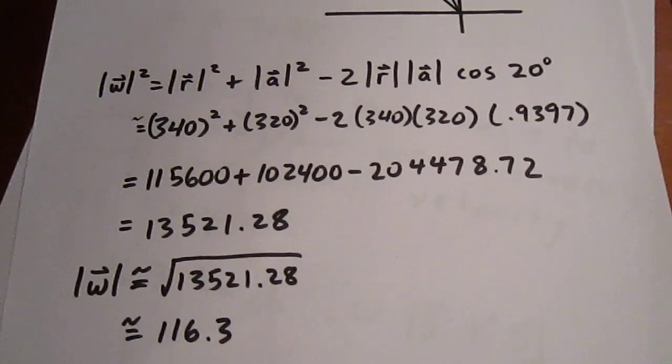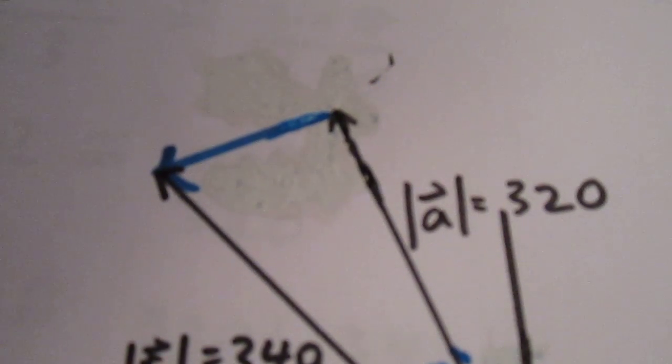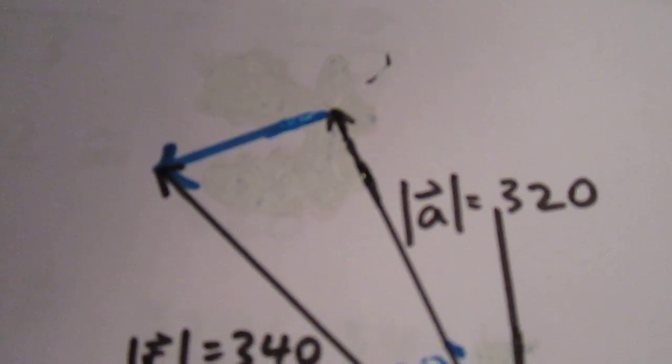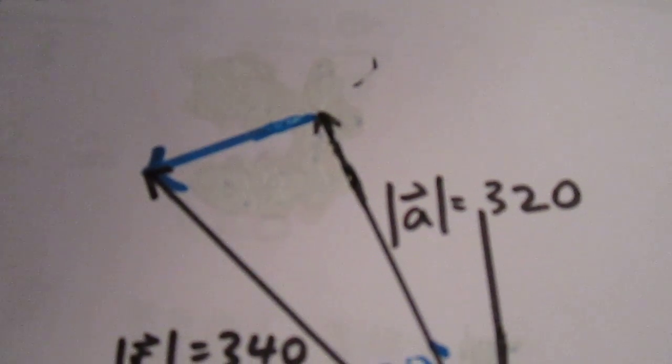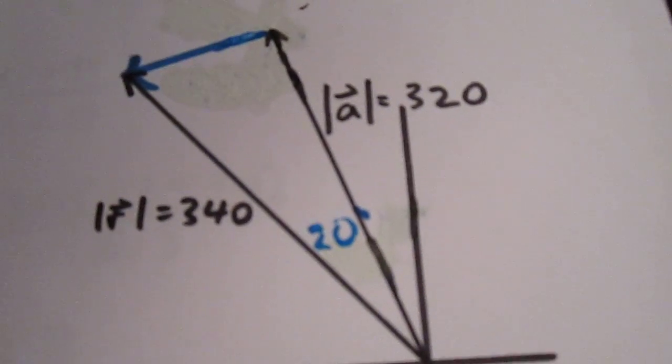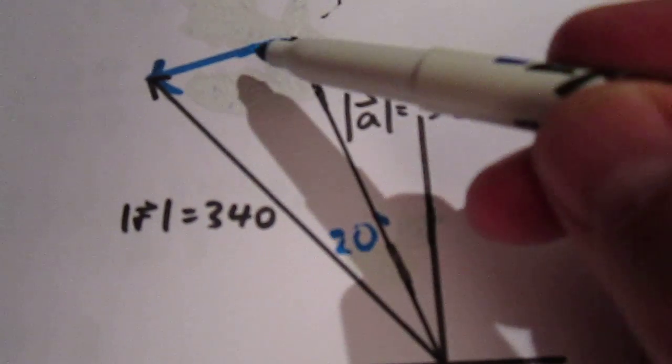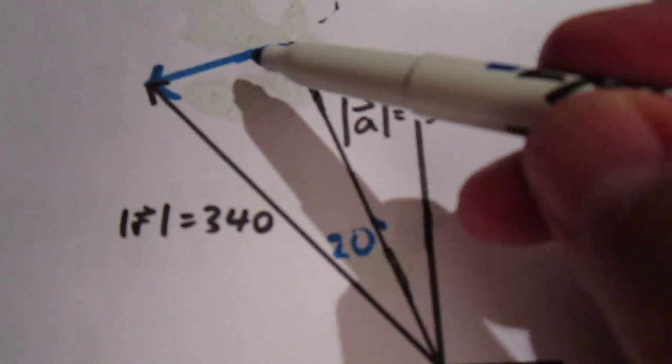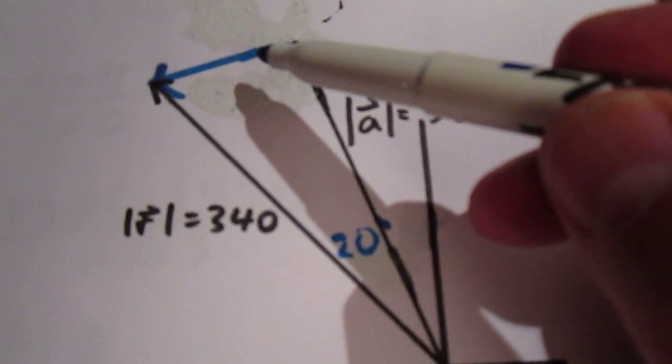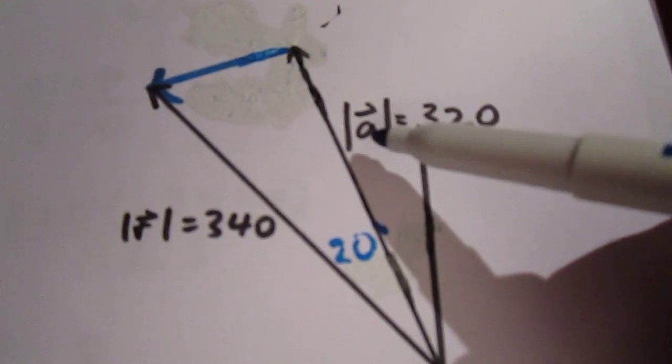We then have to figure out the direction that the wind is traveling, because we need to know the velocity. So we have to find an angle. So what we're going to do here is set up a sine law to find this angle here. We're not going to find the largest angle because the largest angle could lead to an ambiguous case of the sine law. We're going to find the middle angle.